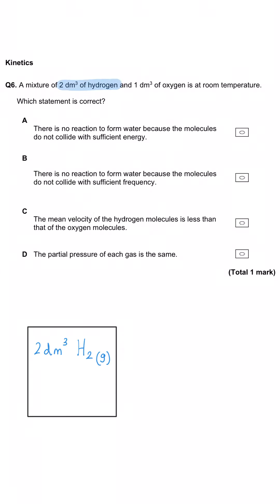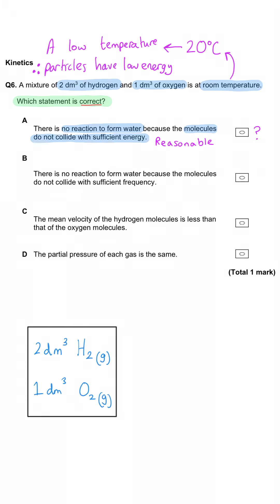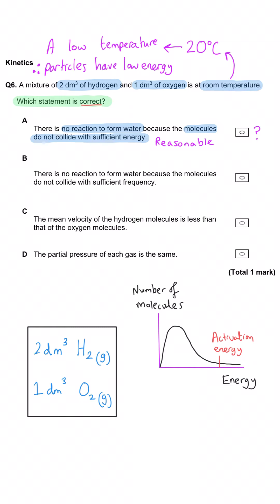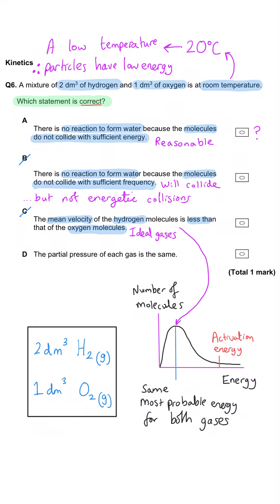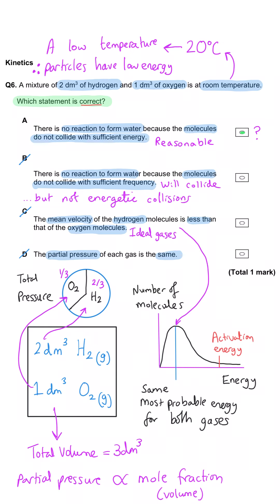A mixture of 2 dm³ of hydrogen and 1 dm³ of oxygen is at room temperature. Which statement is correct? A — there is no reaction to form water because the molecules do not collide with sufficient energy — is very plausible, since this reaction needs activation energy to get started. B is wrong because it's the energy of collision, not the frequency, that prevents reaction. C is wrong: all gases behave ideally and have the same mean velocity. D is wrong: there's twice as much hydrogen, so its partial pressure is twice that of oxygen. So A is correct.